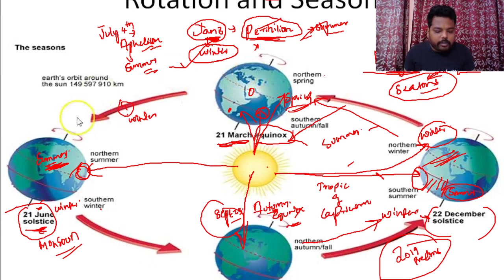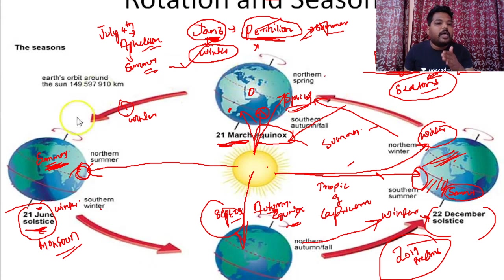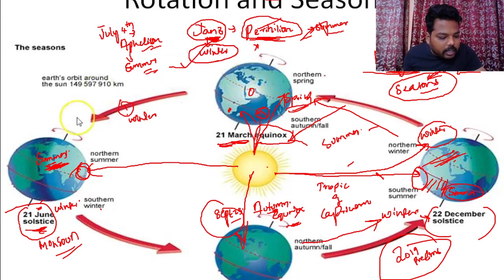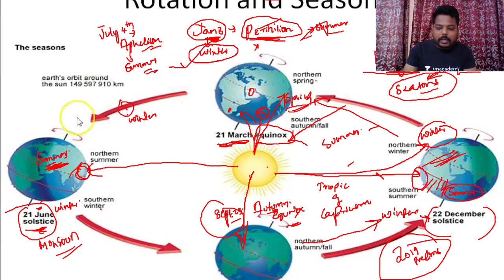To summarize: because of rotation, we have the concept of day and night. Because of revolution along with the tiltness of the earth's axis, we experience the concept of seasons. Please remember this particular point clearly.